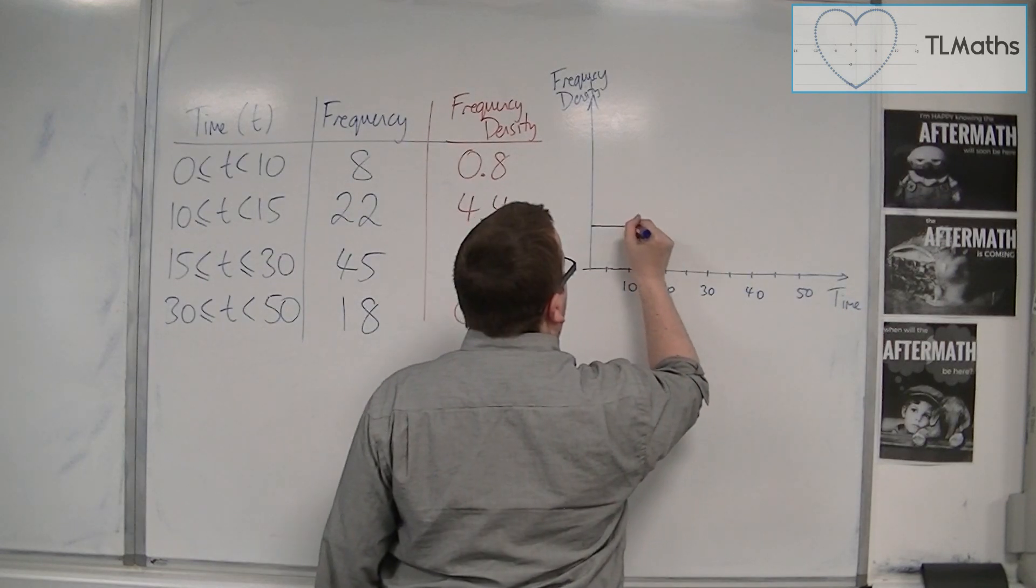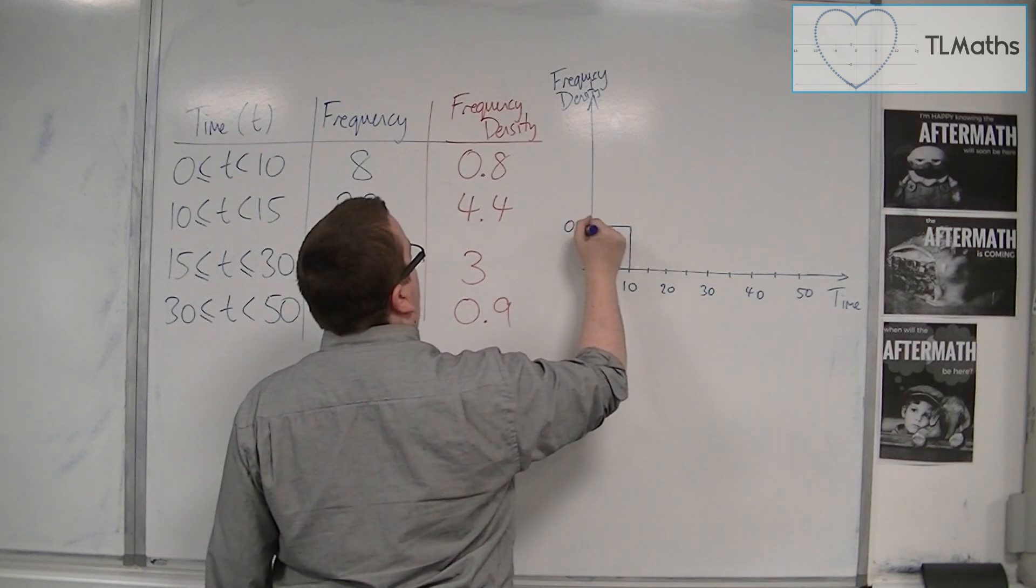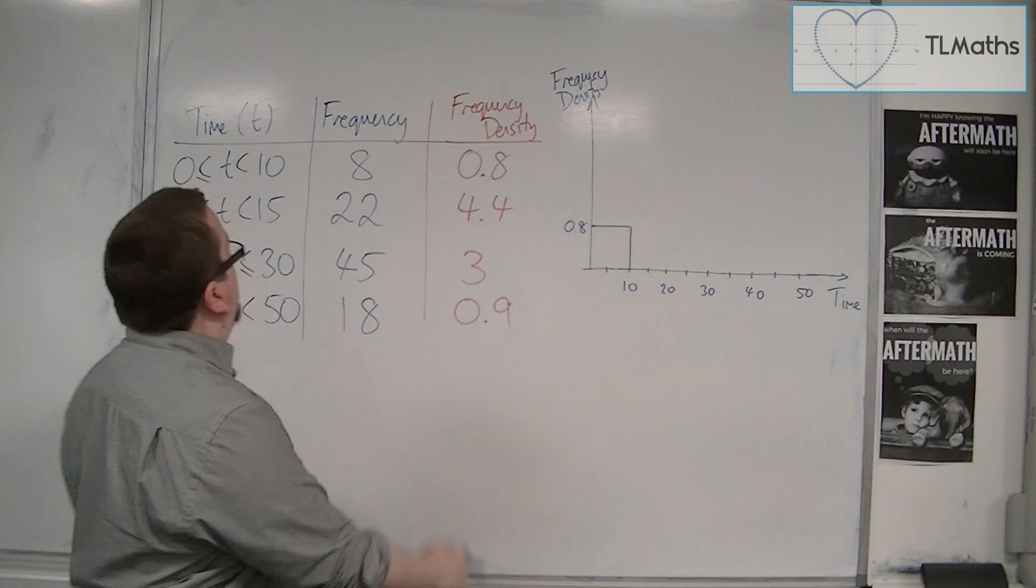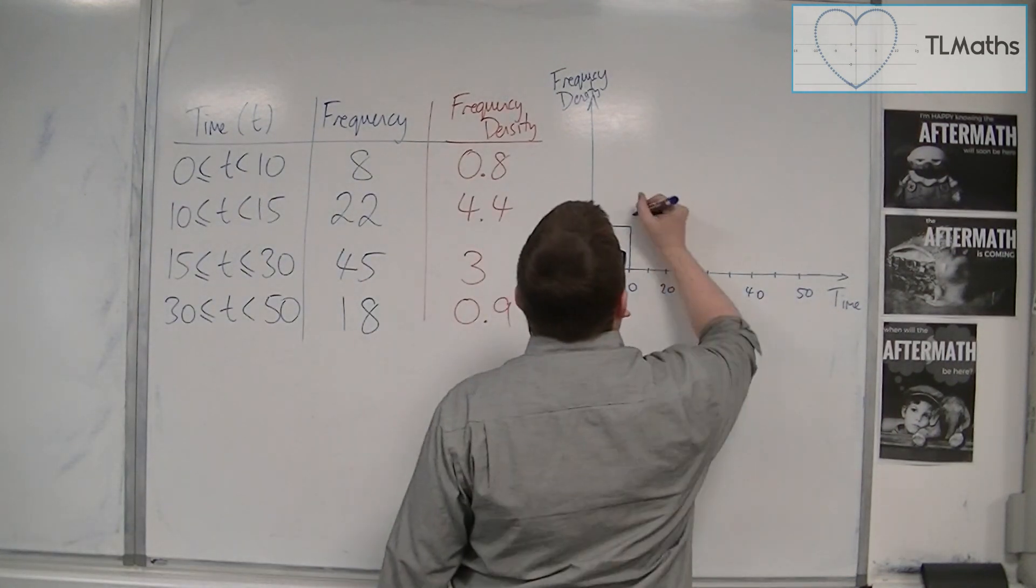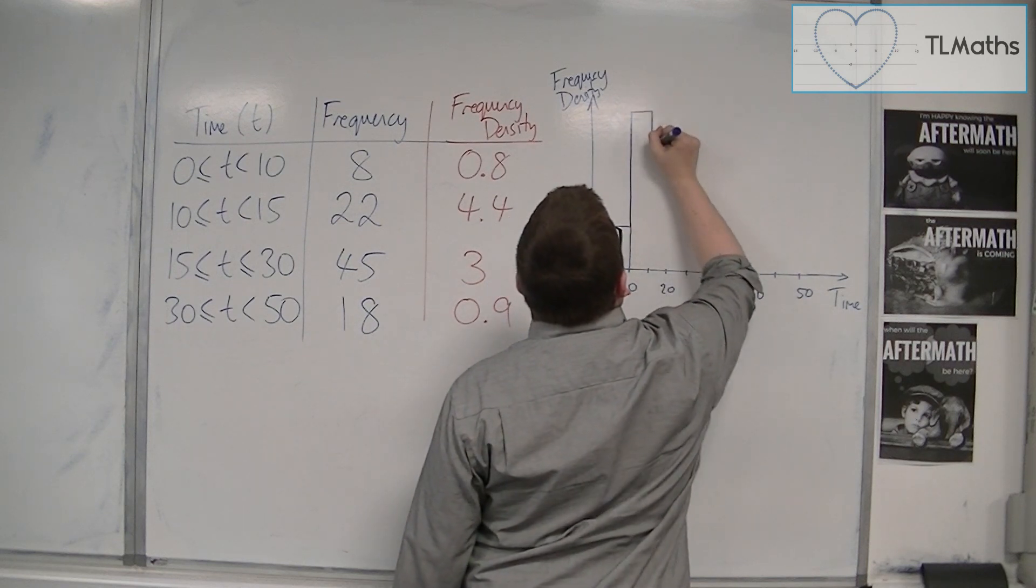So between 0 and 10, this bar is at 0.8. Then we've got between 10 and 15, we're at 4.4. So 10 and 15, very high bar. I'm not going to make this an accurate graph.